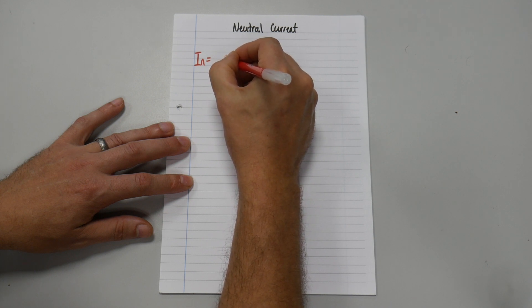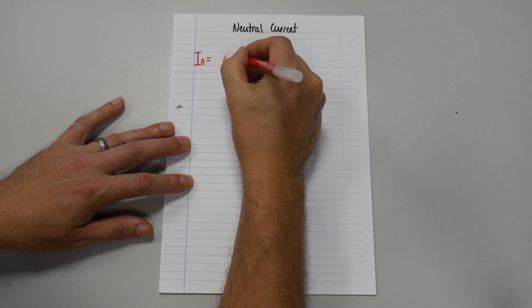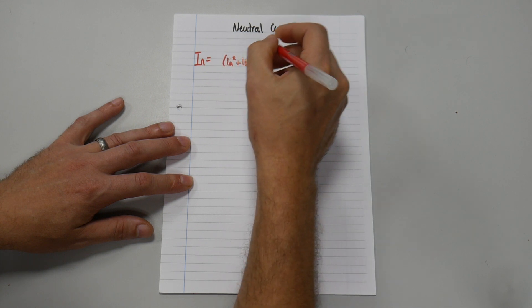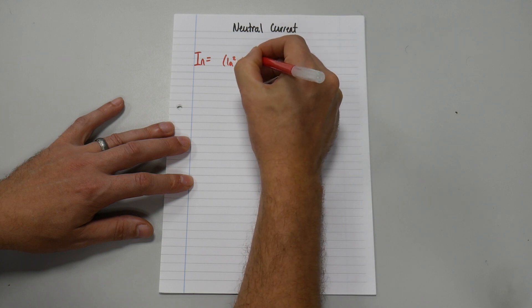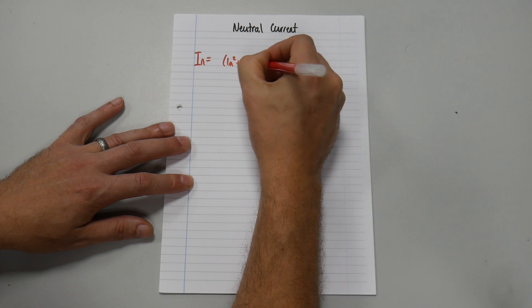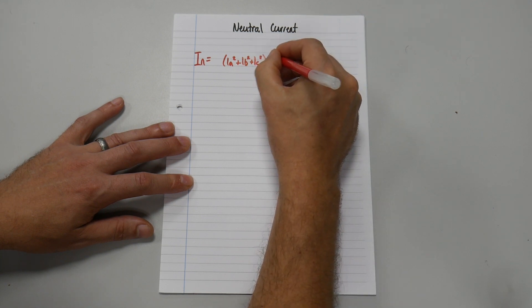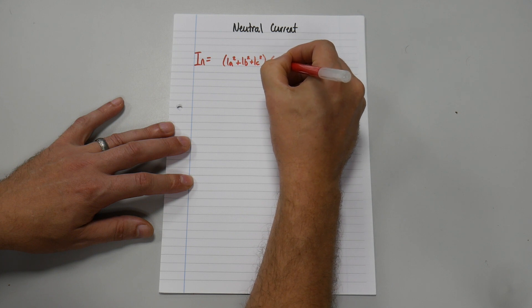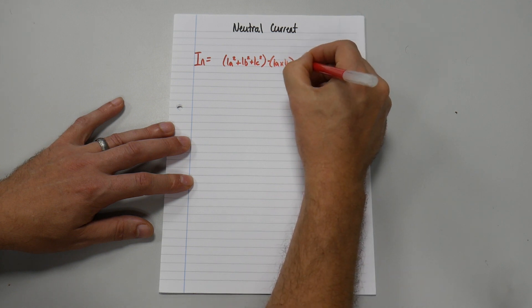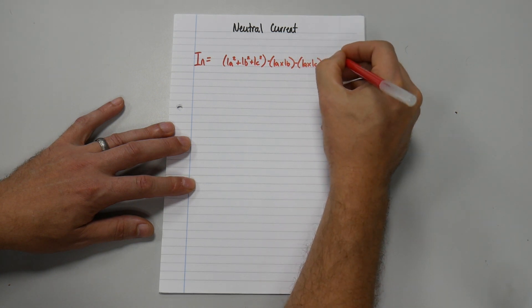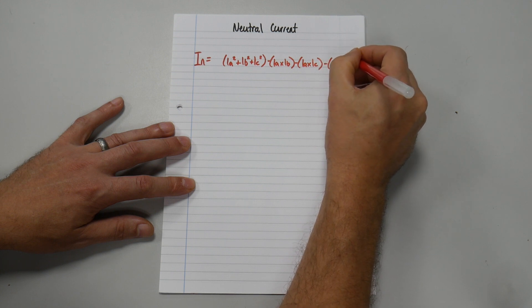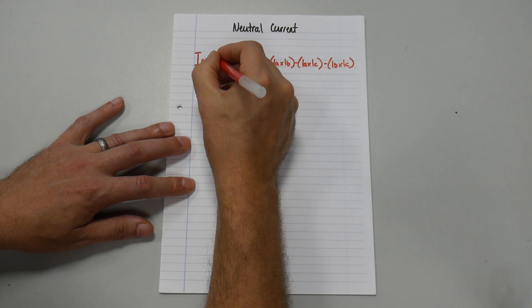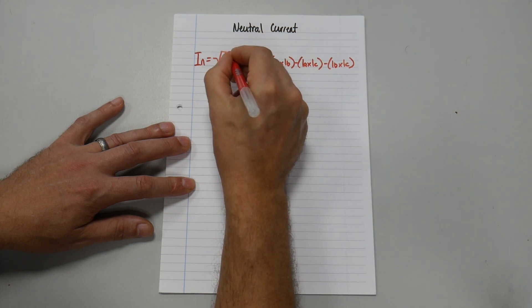So it is I A squared plus I B squared plus I C squared, close brackets, minus I A times I B, close brackets, minus I A times I C, close brackets, minus I B times I C, close brackets, and the whole lot squared.